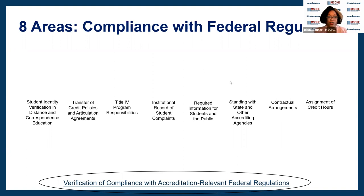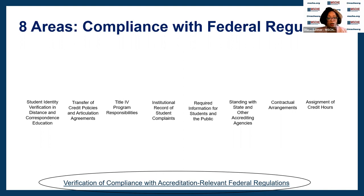I want to point out that not all institutions may be involved with Title IV program responsibilities, and even international institutions may not have to comply with all United States federal regulatory expectations. That does not mean you get to skip Standard 2 Criterion 8 submission of the federal compliance report. These areas, with the exception of the Title IV program responsibilities, are still areas that the Commission expects institutions to be in compliance with. You still need to submit that documentation and ensure your compliance.